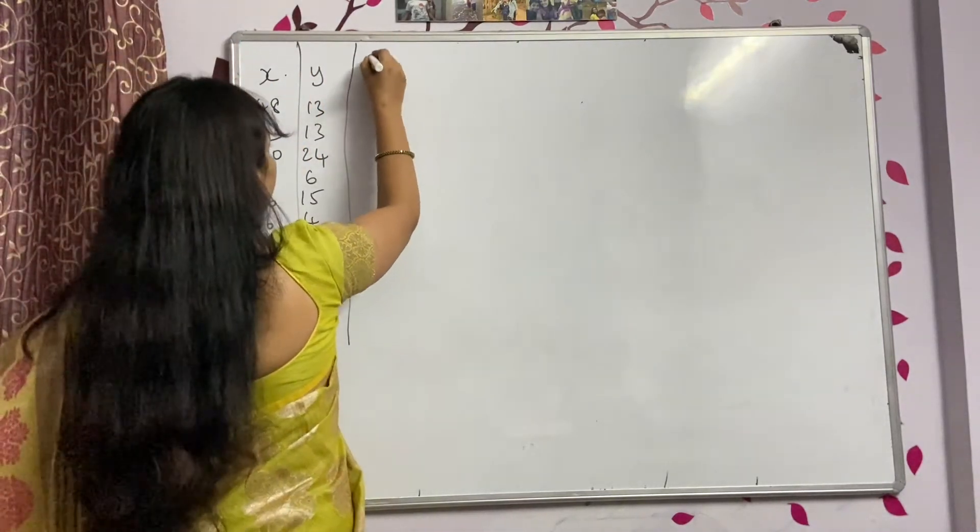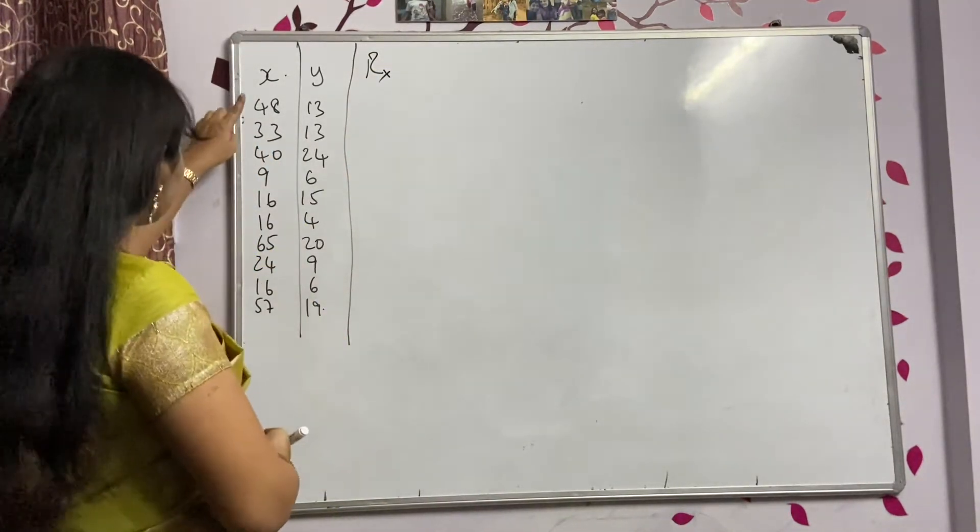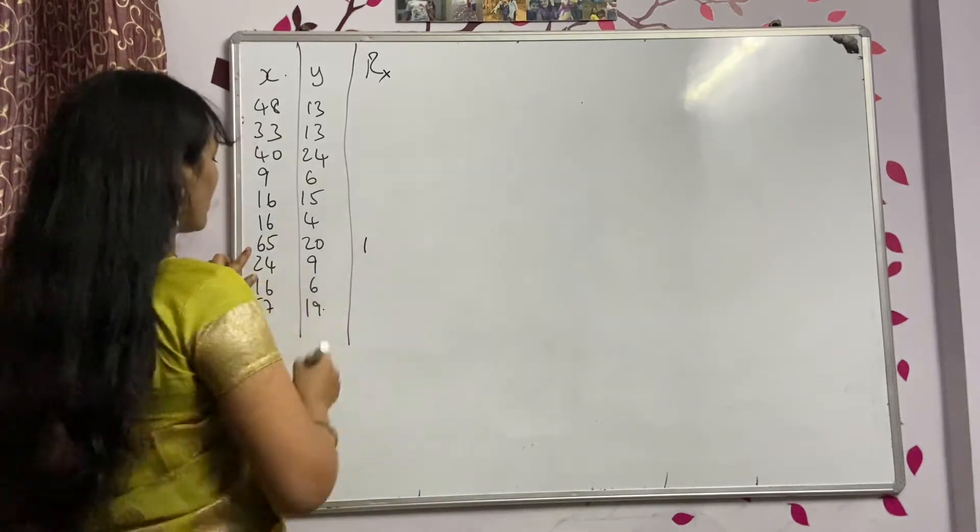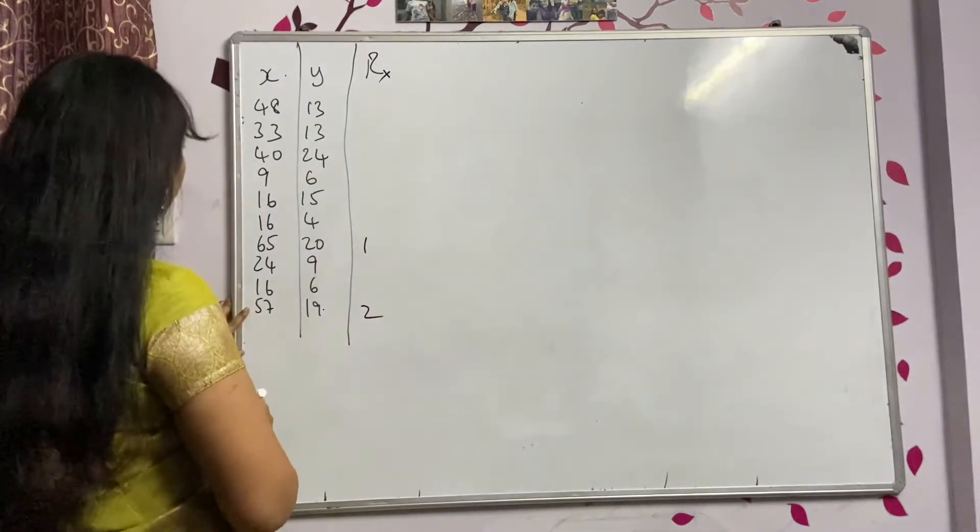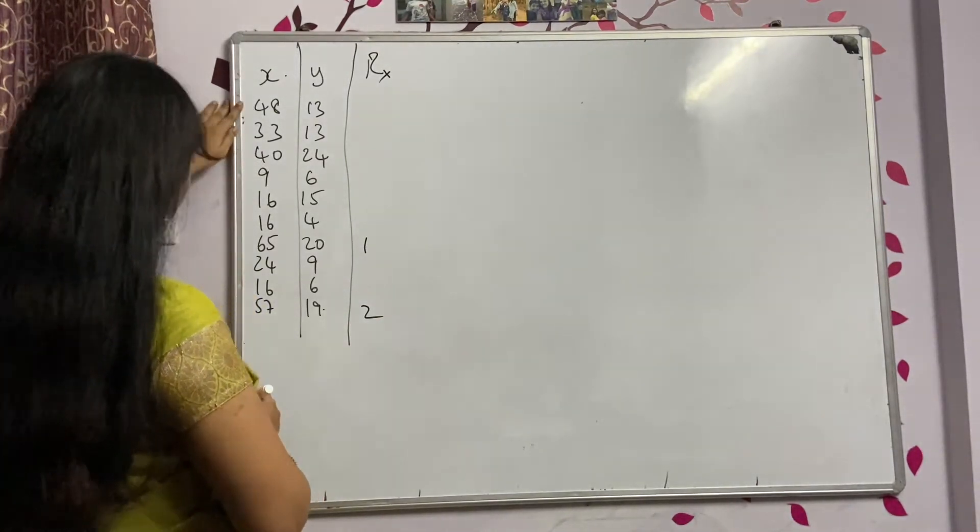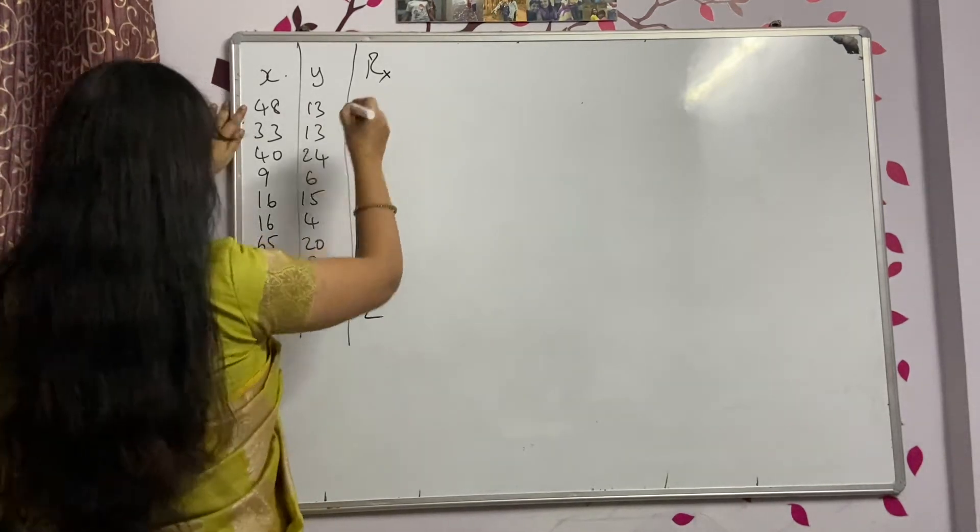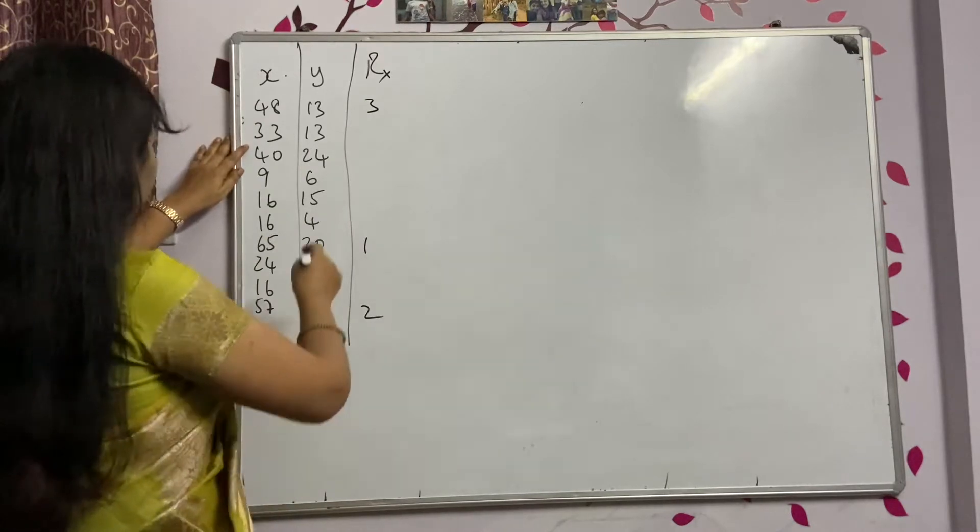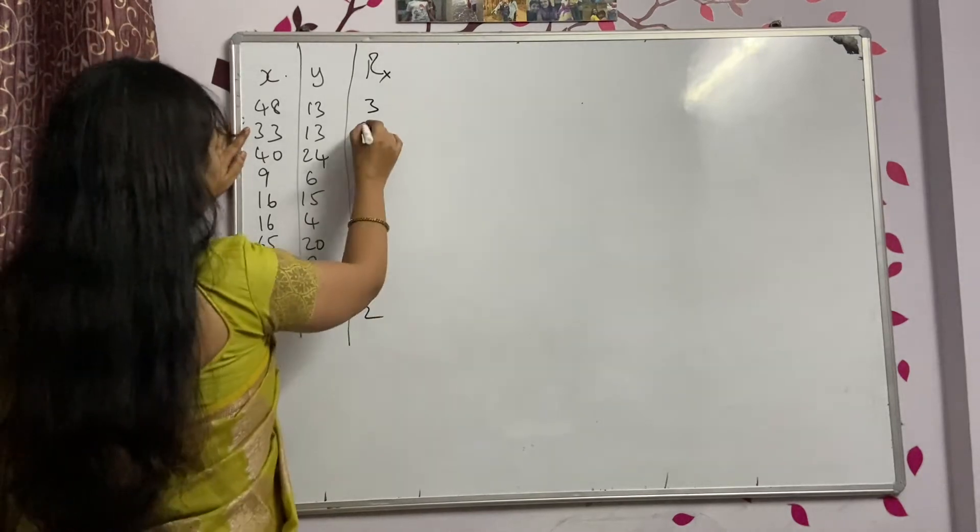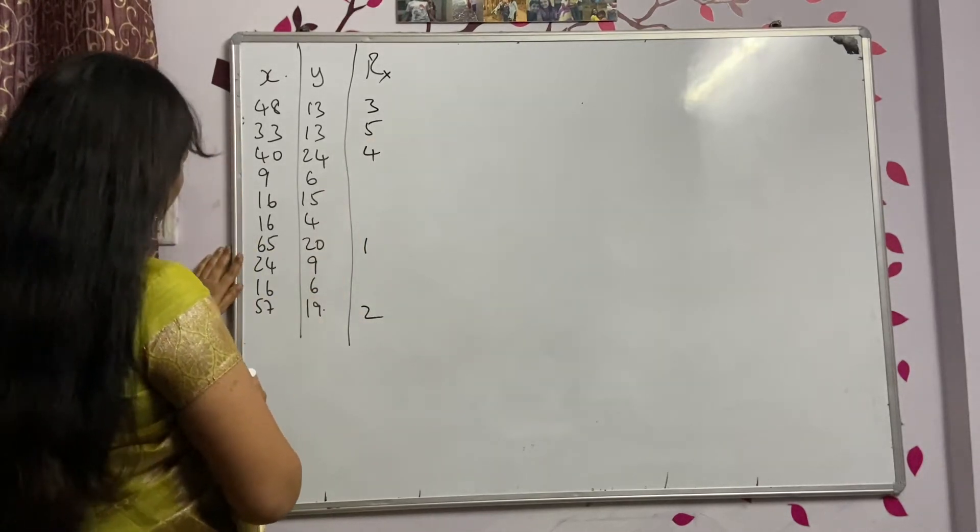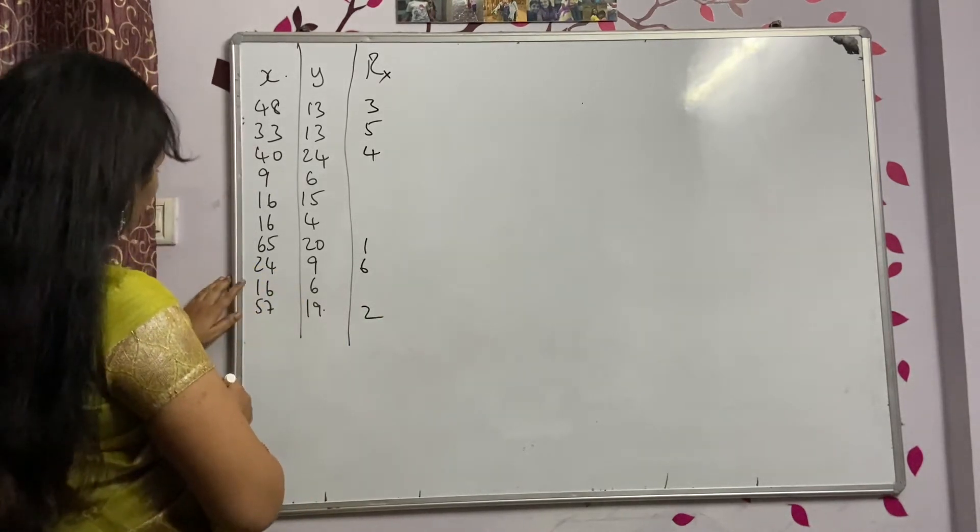If ranks are not assigned, you can see the data like this. So he gave you the data of X and data of Y. Now I should assign ranks to X and Y. So when I am assigning for X, I call it as RX, ranks for X. So what is the highest number? 65 is the highest number, I call it 1. What is the next highest? I think it is 57, 2. Next highest is 48, so you have to cross it. Is there any repeated? No repeated. 48 is 3. Next one, 40, 4. 40 after 33, 5. Next, 24, 6.